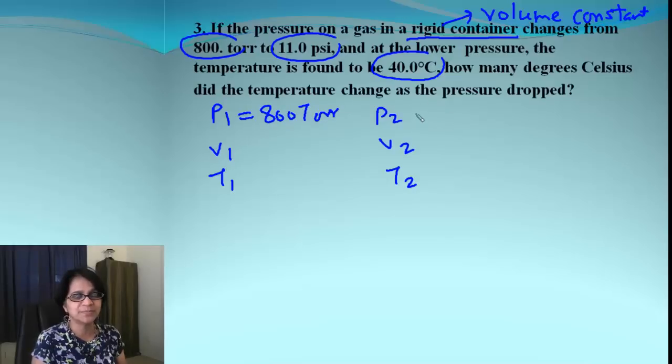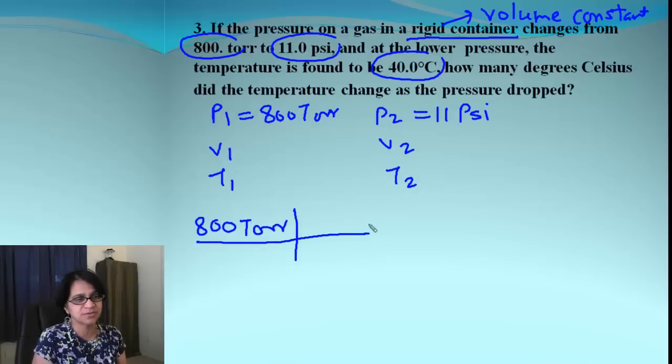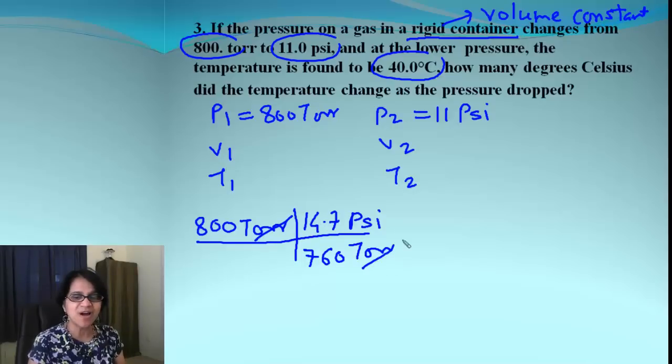And it says the first pressure is 800 torr. And then the pressure goes to 11 psi. Did you realize the units are different? That will not work for gas law. So we need to convert some unit into other. And I always like to begin with the first one. So when we convert torr to psi, what do we get? We know 760 torr equals 14.7 psi. So when we solve that, we get the answer 15.47.